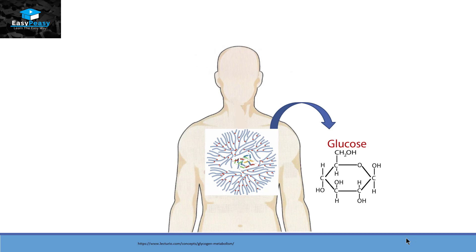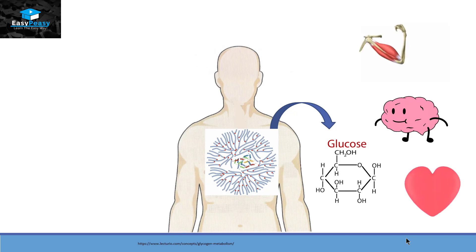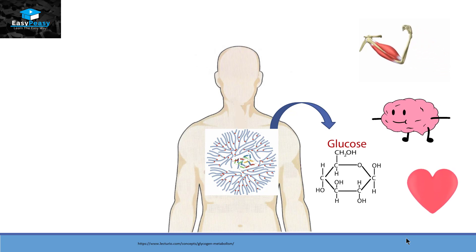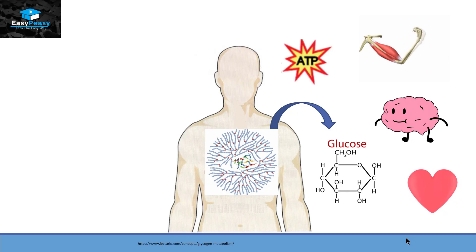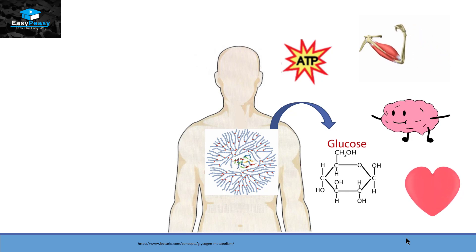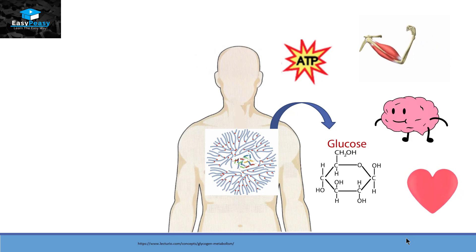Now the cells that are going to change this glycogen into glucose have two different types of targets. The first type is to gain instant energy. For example, muscle cells, brain cells, and heart cells require instant energy, so when they are low on glucose, they will convert glycogen into glucose and take energy from it.